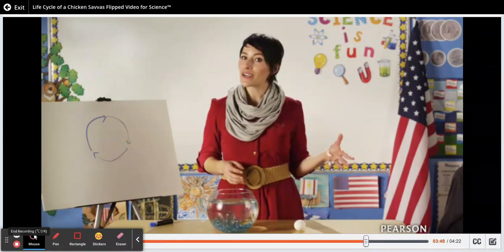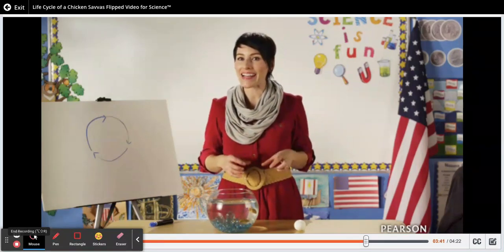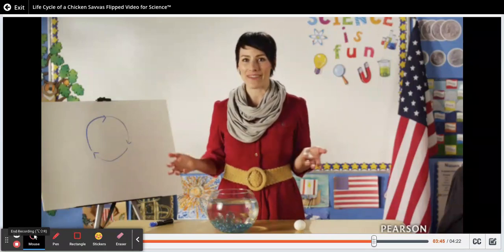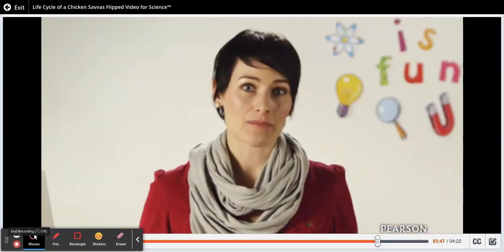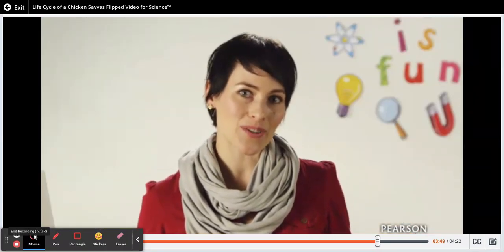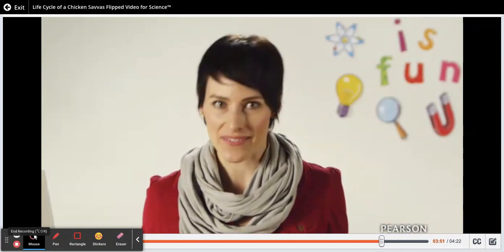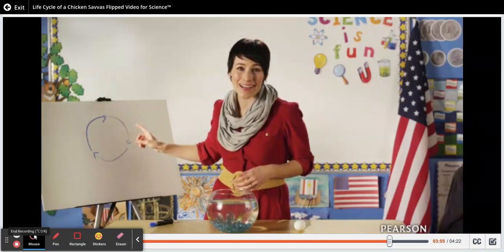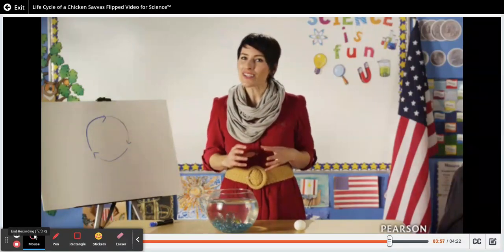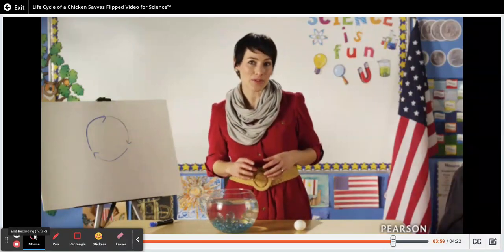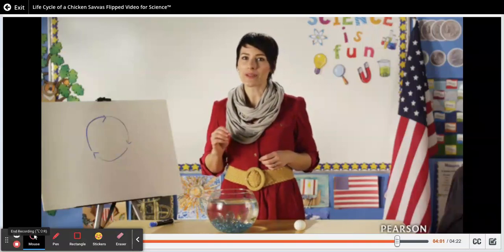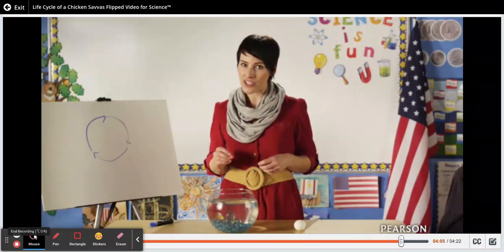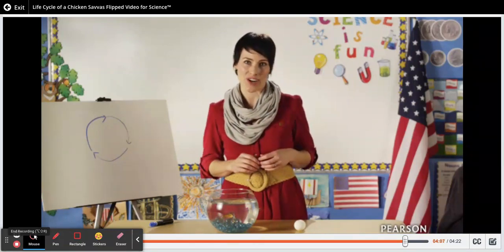In today's video, we observed, compared, and contrasted the life cycles of a chicken, a frog, and a fish. With the help of a grown-up, choose one of these three kinds of animals and record the stages of its life cycle. Draw a diagram that shows a cycle with no beginning and no ending. Draw each life stage that type of animal goes through with arrows in between that point to the next stage, and write the name of each stage next to each picture.